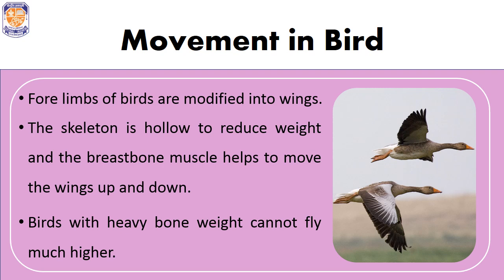Birds with heavy bone weight cannot fly much, such as emu, kiwi, and ostrich. The ostrich is also the fastest running bird in the world and can run up to 97.5 kilometers per hour.